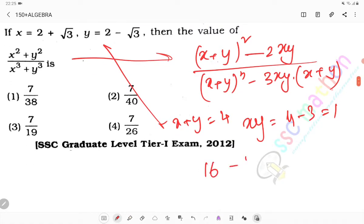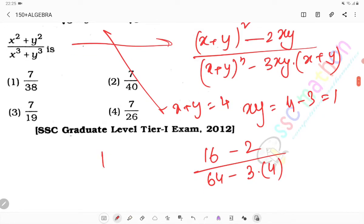So we get 16 minus 2, that's 14, divided by 64 minus 3 into 4, which is 64 minus 12. 14 by 52, that equals 7 by 26.